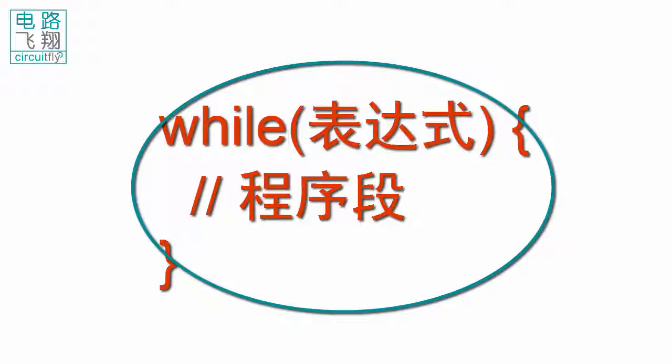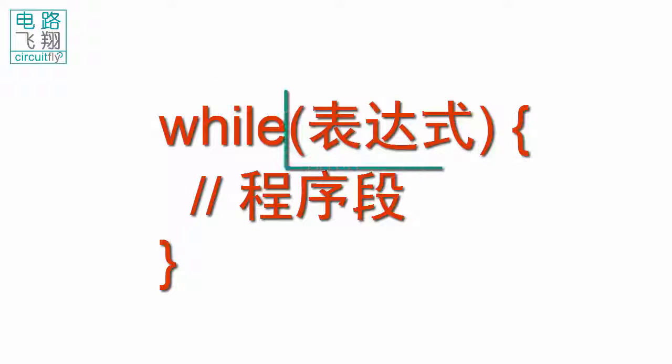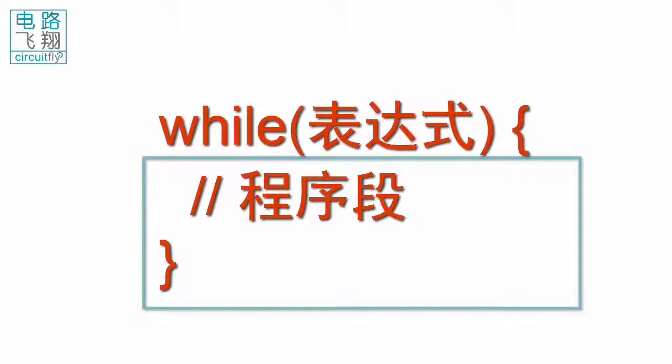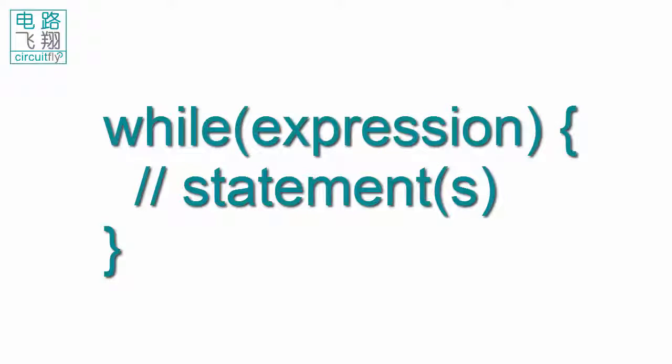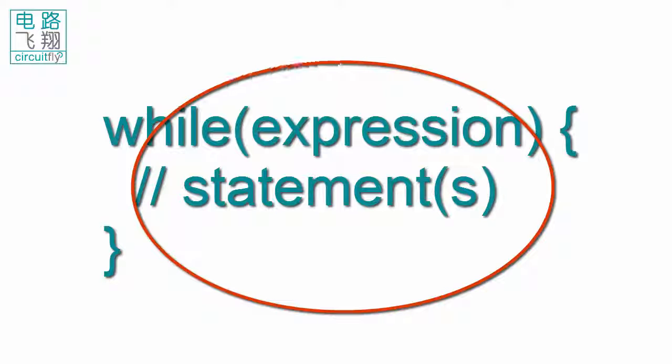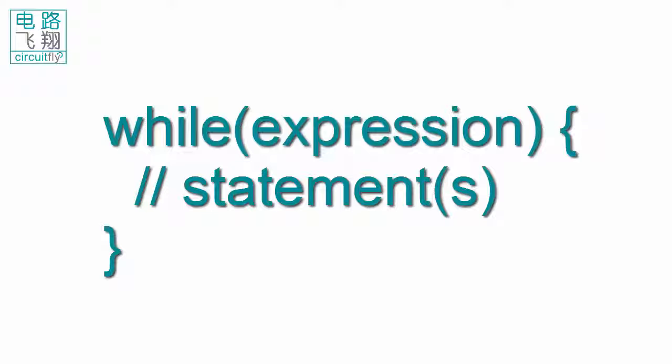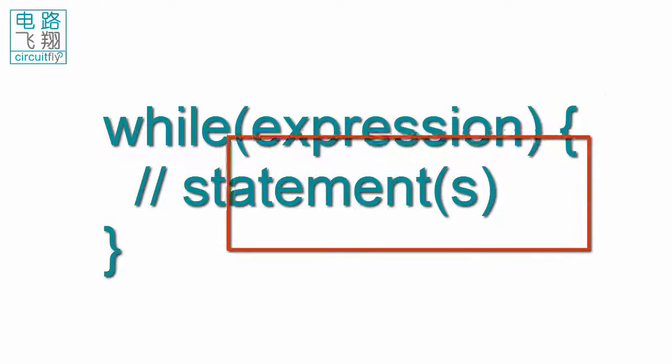除了for循环外,while循环经常用到,它的标准句法是while,括号表达式,大括号程序段。Apart from for loops, while loops are also frequently used. The syntax of a while loop is while bracket expression, curly bracket, statements.